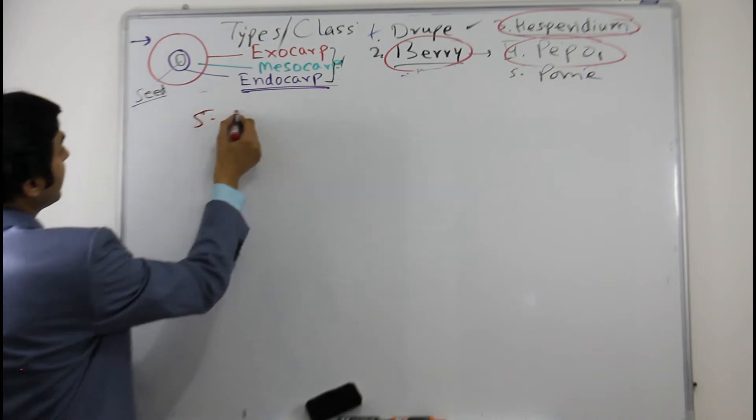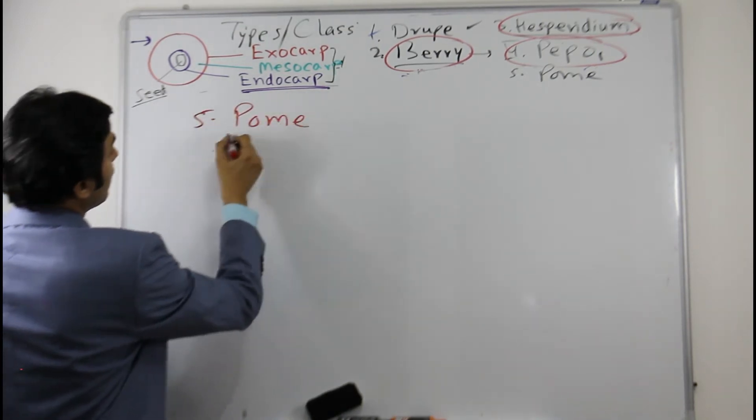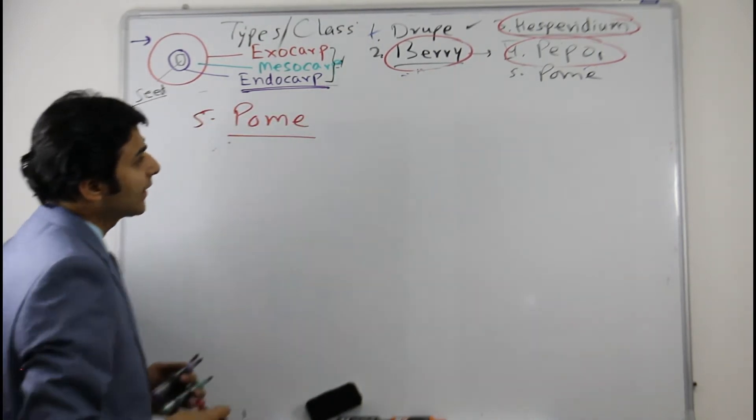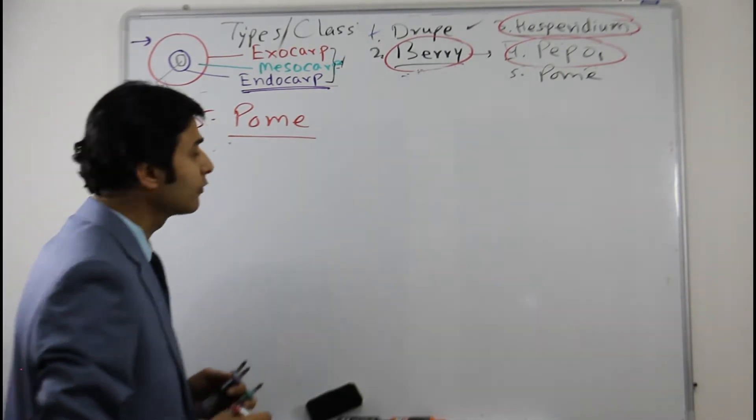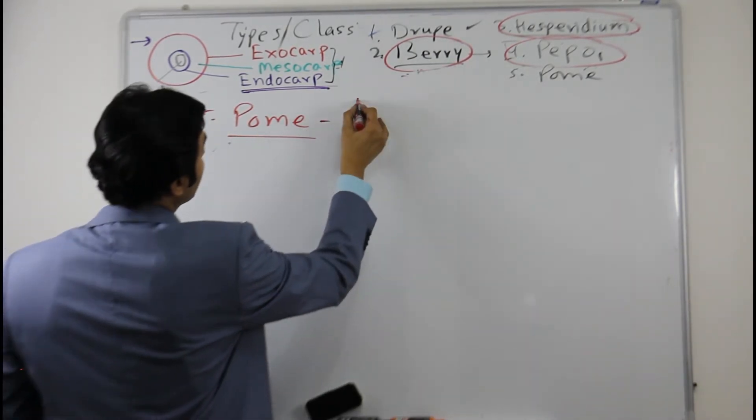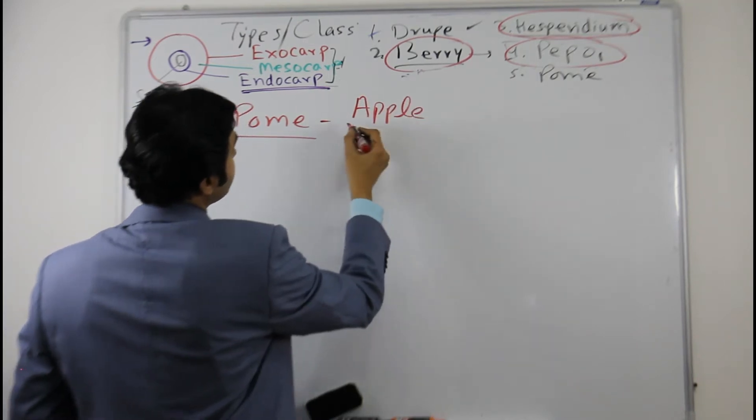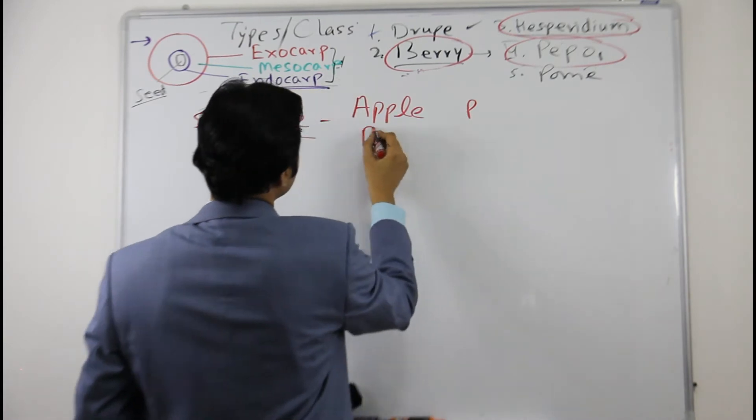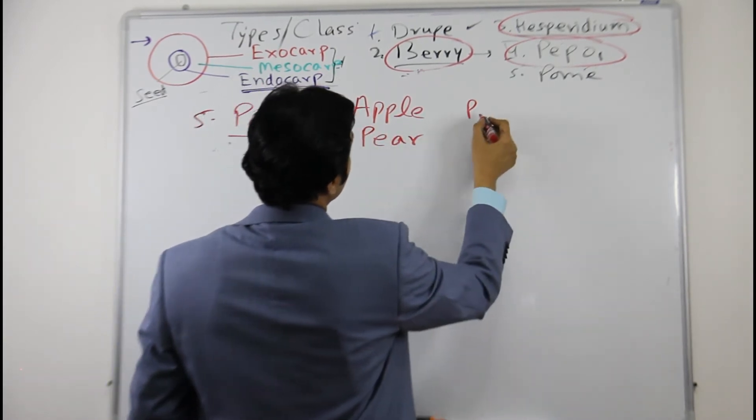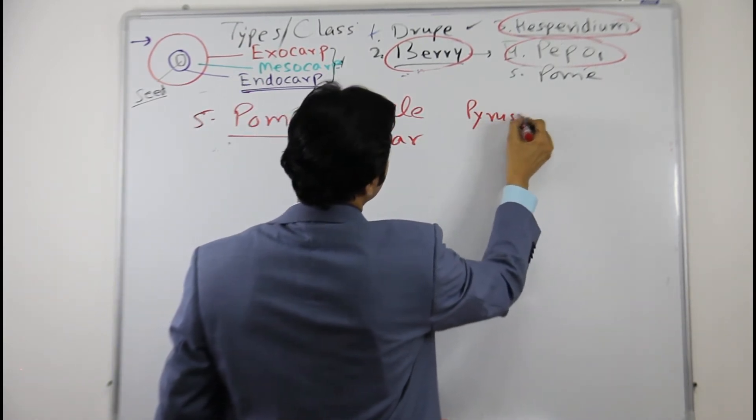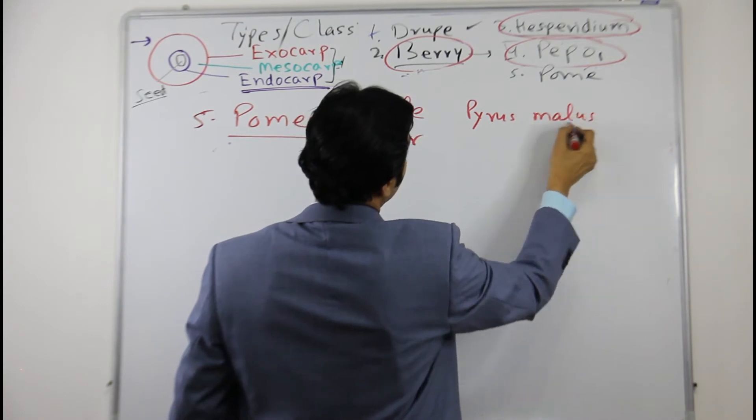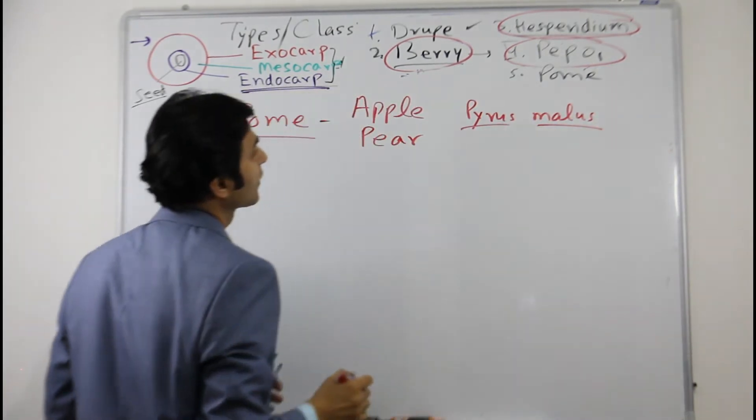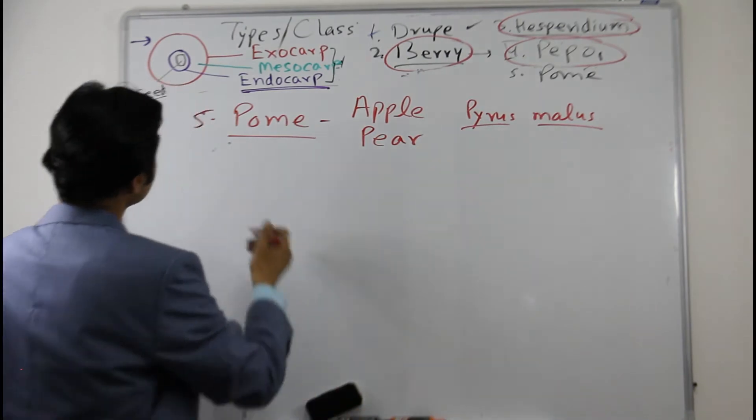Number five is pom. This is again an interesting type of fruit. The representative example fruit type is apple and pear. So Pyrus malus, apple, and Pyrus sylvestris.